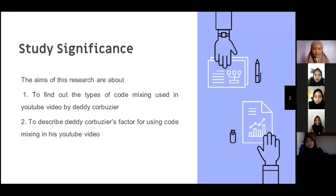The first is study significance. The aims of this research are first, to find out the types of code mixing used in YouTube video by Dedy Corbuzier, and second, to describe Dedy Corbuzier's factor for using code mixing in his YouTube video.